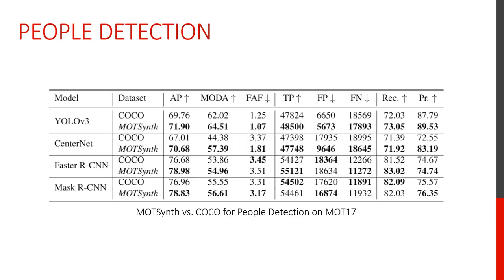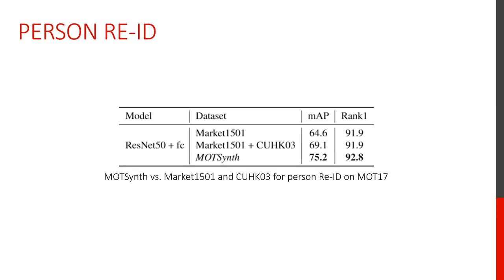For people detection, we used four heterogeneous detectors: YOLO V3, CenterNet, Faster RCNN and Mask RCNN. By training the models on ModSynth, we consistently outperform models trained on COCO. For person re-identification, ModSynth training was compared to Market and DukeMTMC. The results show that our synthetic training outperforms the union of both real-world ReID datasets, suggesting synthetic datasets can be used as a full replacement for ReID applications.